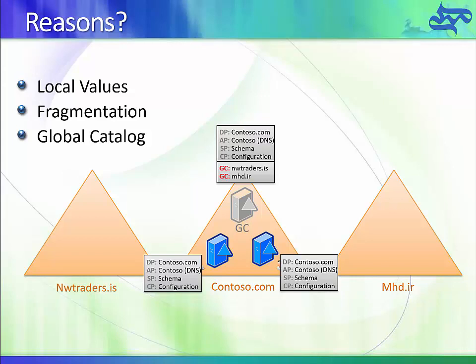It's worth noting that not all attributes are stored in the global catalog partition — only those selected via the Partial Attribute Set (PAS). As you can see in the picture, regular domain controllers have four partitions, but the domain controller holding the global catalog role has six partitions. This means the global catalog server uses more space in NTDS.DIT, which is the third reason for different database sizes.